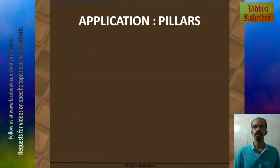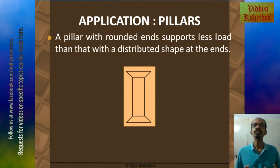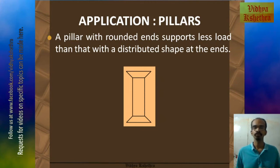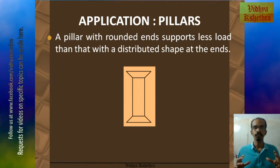Next is the application in the case of pillars. A pillar with rounded ends supports less load than one with a distributed shape at the ends. The one shown in the figure has a distributed shape at its ends, so this type of pillar can support more load when compared to simple pillars.